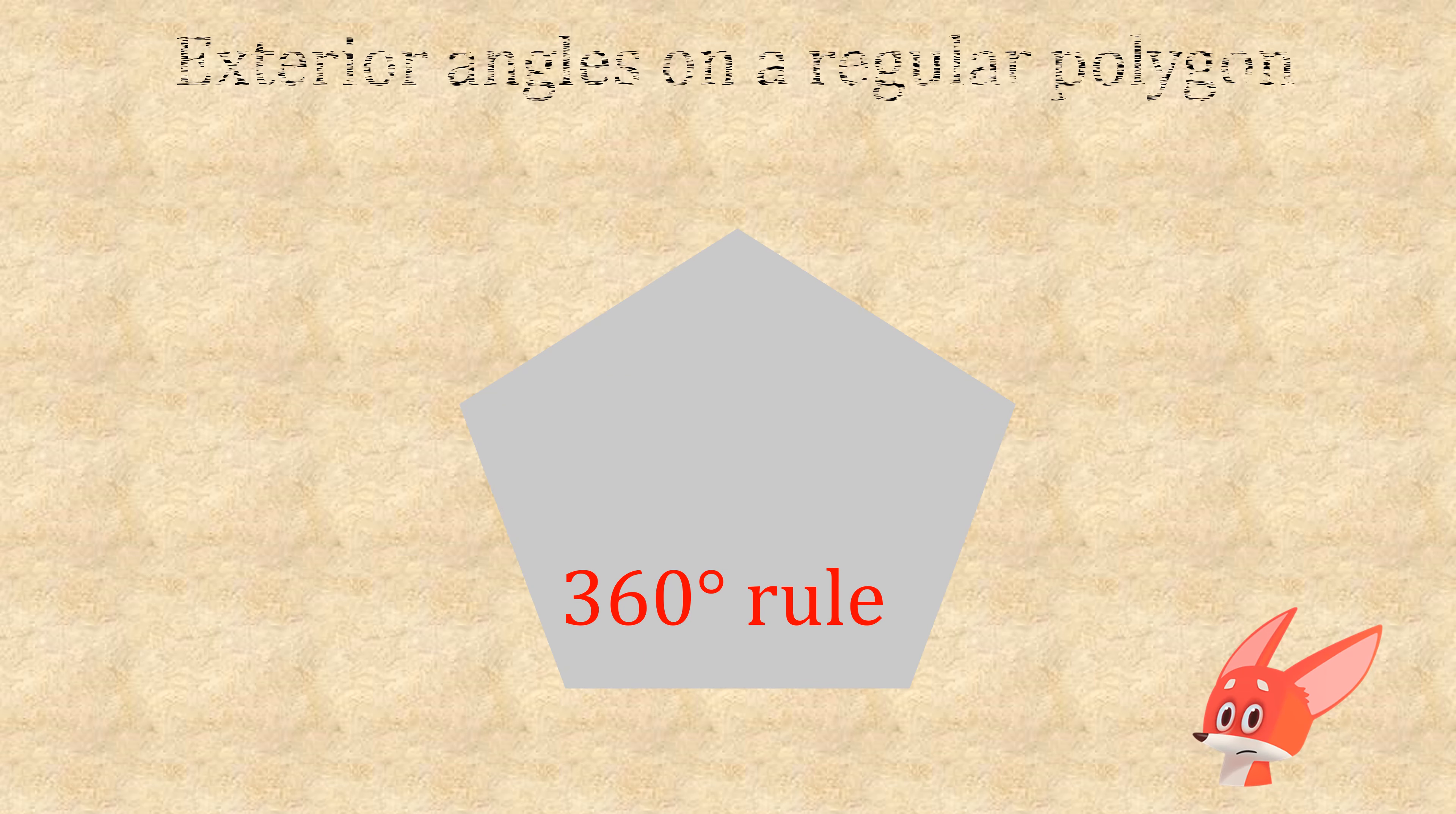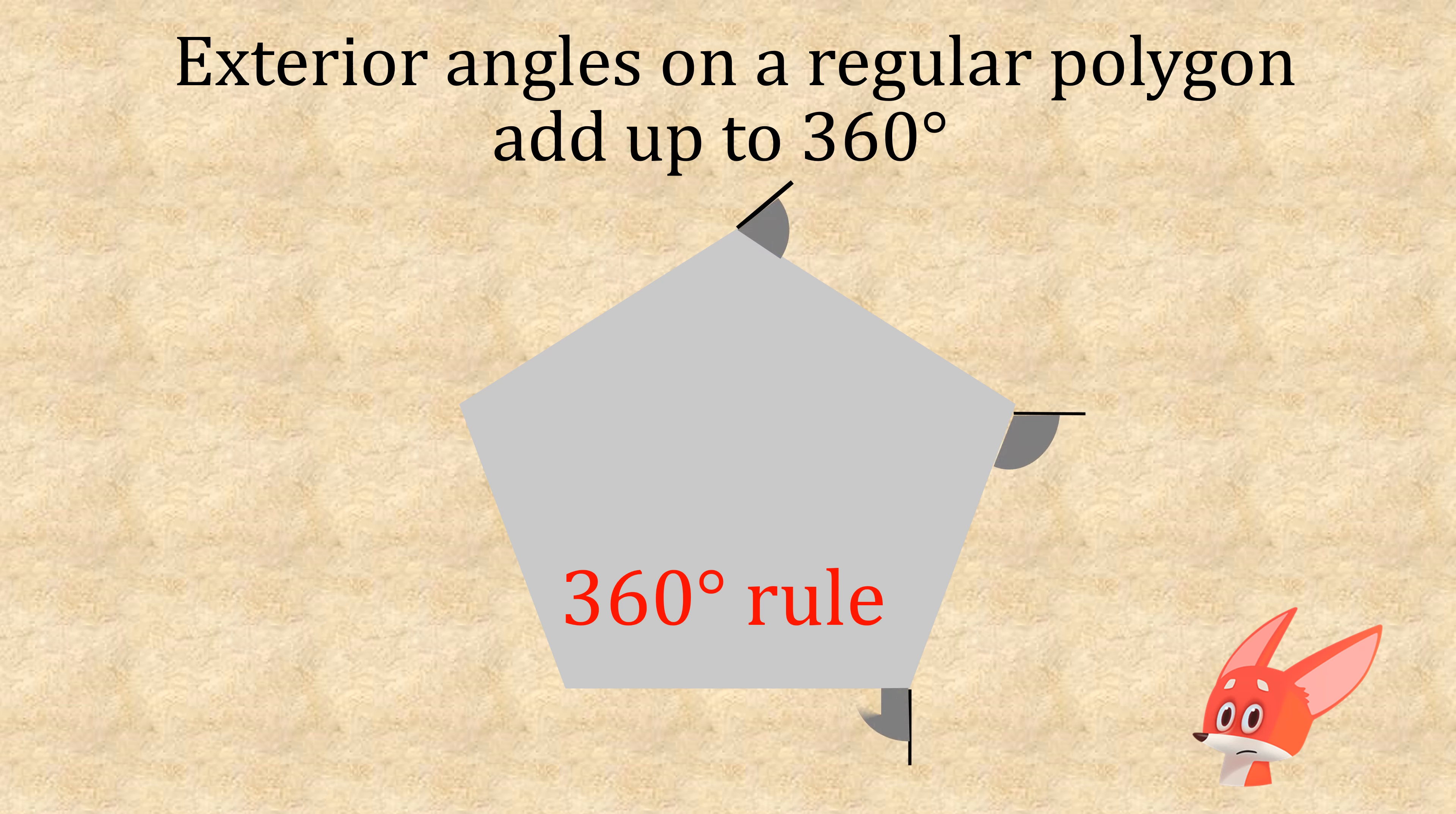Now the most important rule for exterior angles on a regular polygon is they all add up to 360 degrees, no matter how many sides the polygon has.